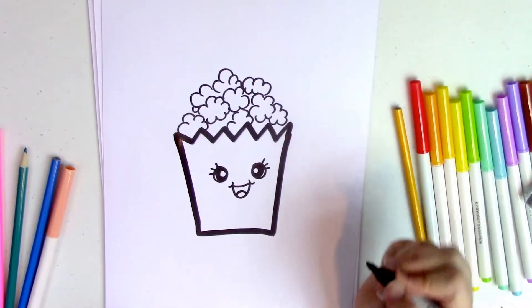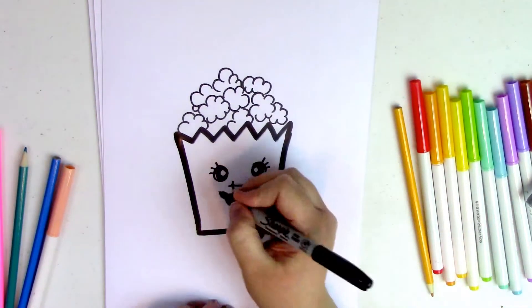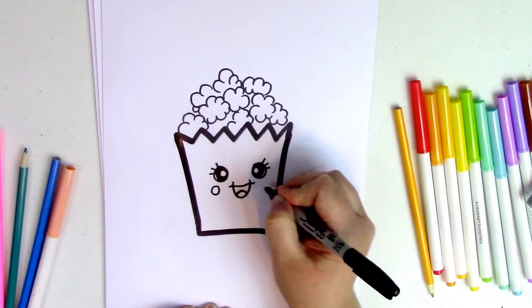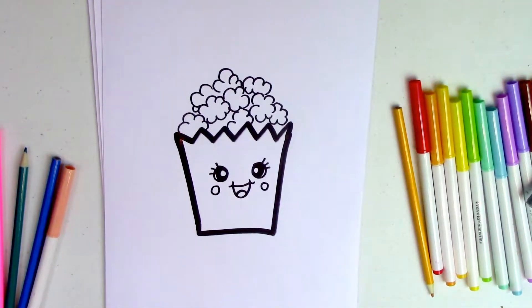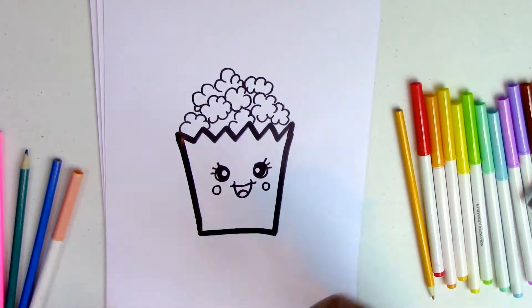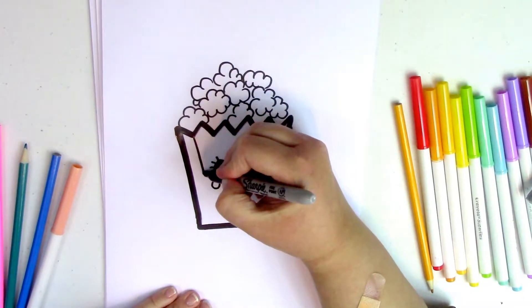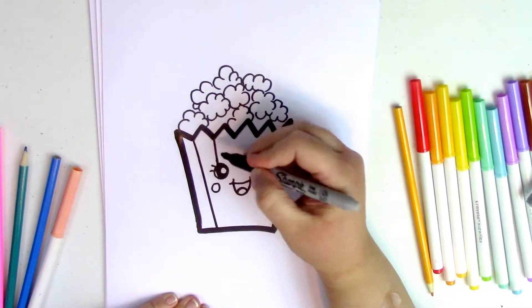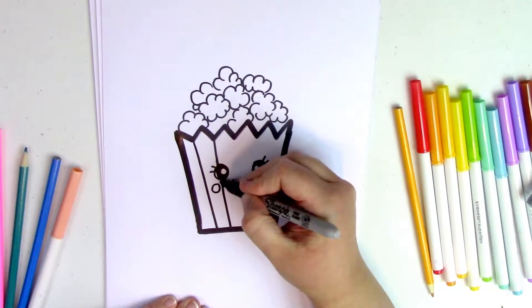All right, now just draw the cheeks, which are two circles. And one more thing, last but not least, we're going to draw our lines for a popcorn box. We're just going to draw them around what we already have.